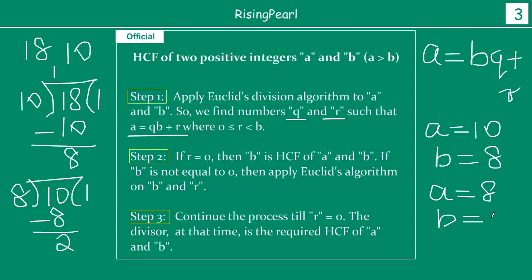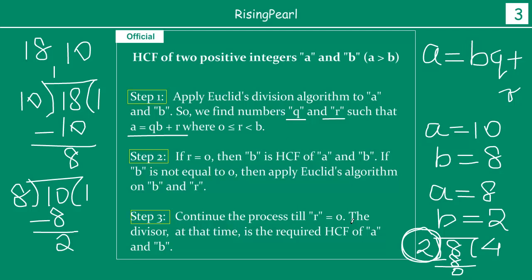So now A becomes 8 and B becomes 2. Dividing 8 by 2: 2 × 4 = 8, and the remainder becomes 0. The last divisor is 2. Euclid's algorithm says when the remainder becomes 0, the divisor at that point is the required HCF. So HCF(10, 18) = 2, which is exactly what we found using prime factorization earlier.